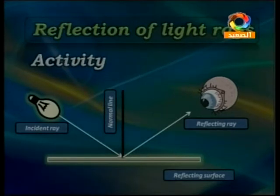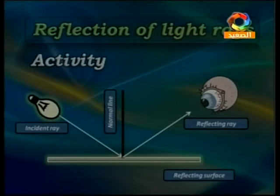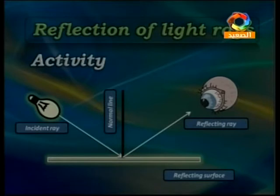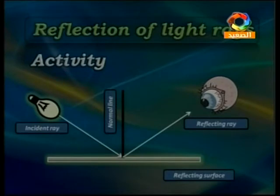In this shape we have the reflecting surface — a mirror or a metal surface — and the normal line, which is very important to draw. We have the incident ray coming from the source of light that falls on the reflecting surface. After that, we have the reflected ray, which is the light ray that moves back and can be seen by the naked eye.